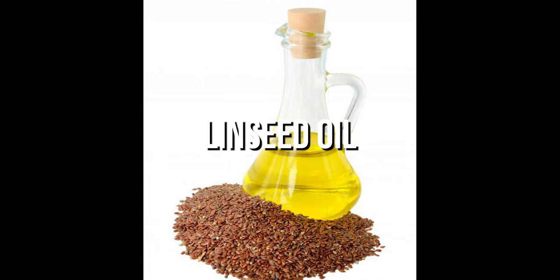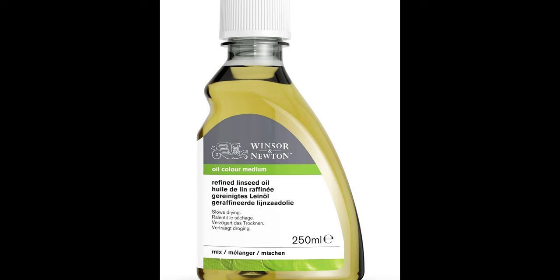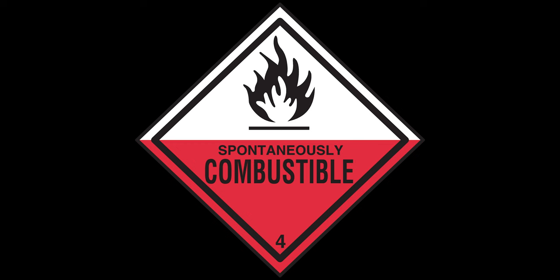Traditionally, linseed oil has been used for centuries by artists and is a good starting point for beginners. It's made from linseed, and you can get cold pressed — which is typically a better quality oil — or refined, which has gone through a heated extraction process. If you remember the slow drying over fast drying and fat over lean principle, you need faster drying thinner layers below your slower drying fatter layers. You also need to be conscious of the yellowing of linseed oil, which can sometimes over time result in the yellowing of your initial paint colours. Ensure you take care when disposing of rags soaked in linseed oil as it can be highly combustible.